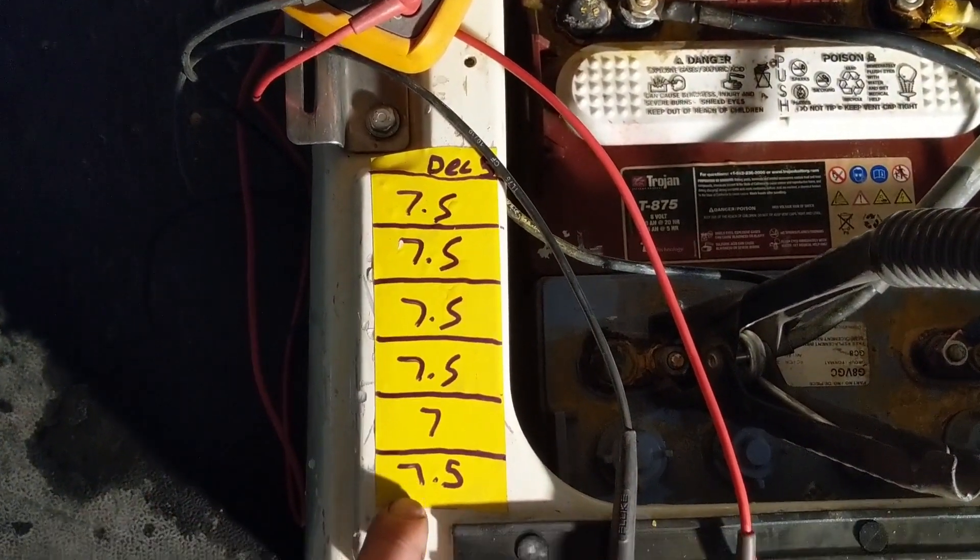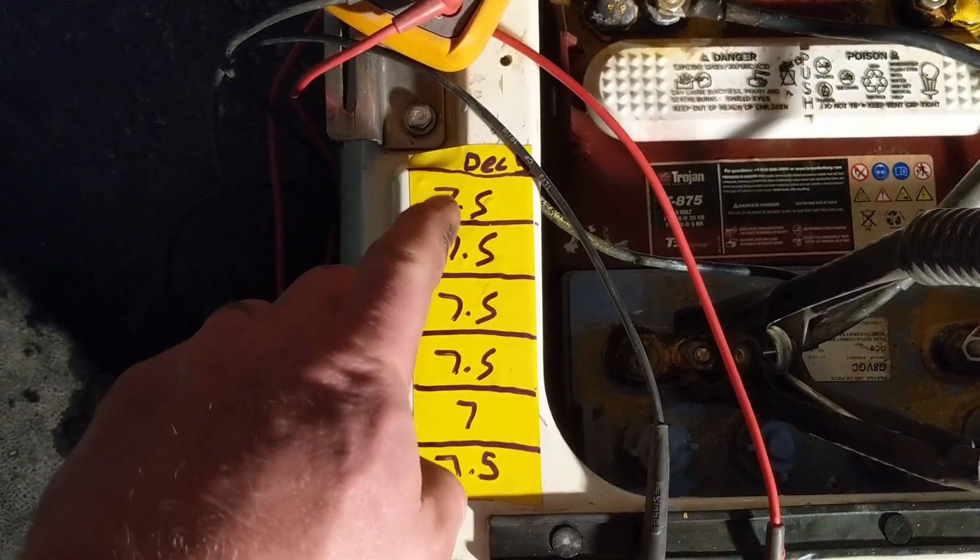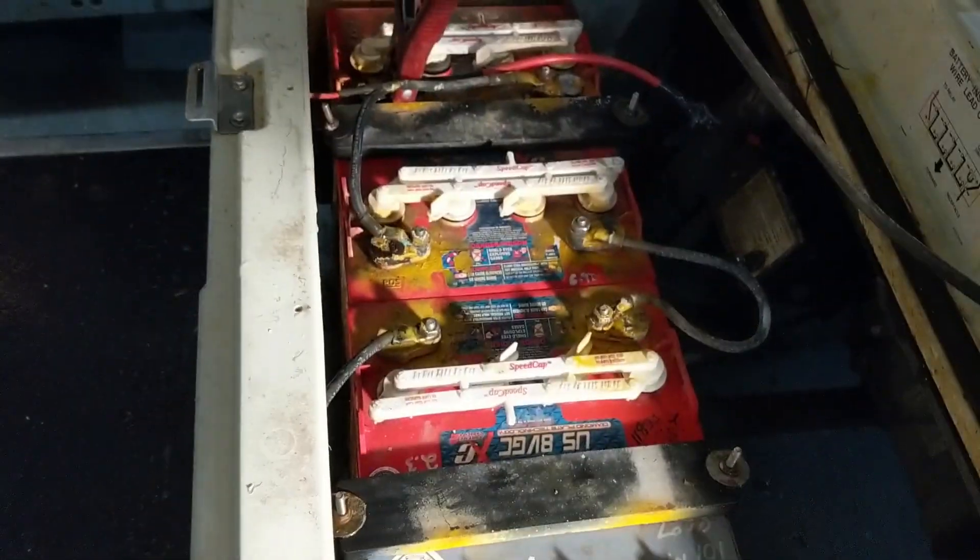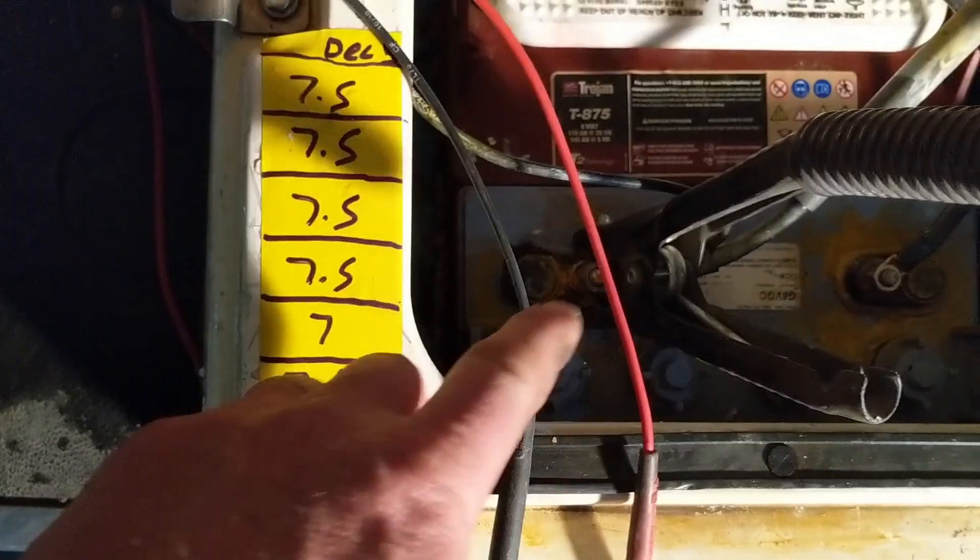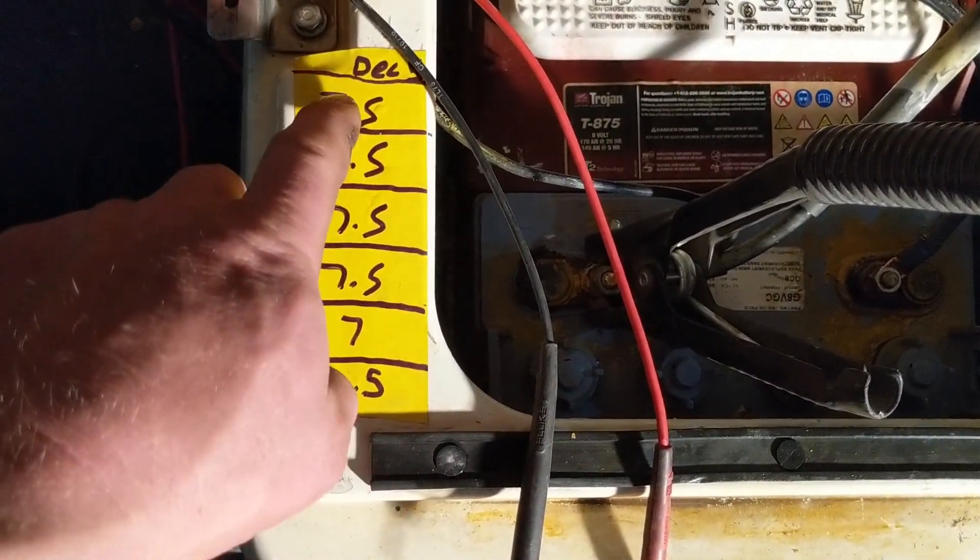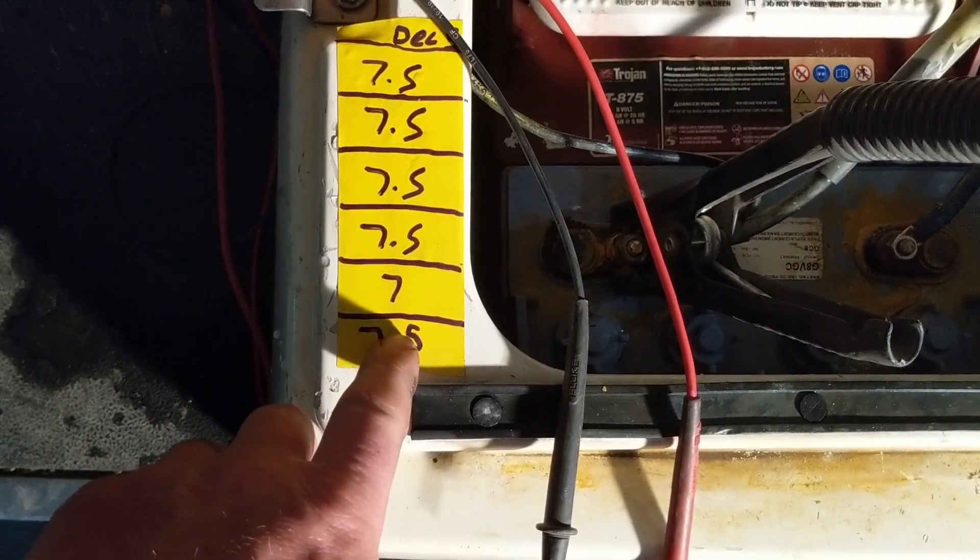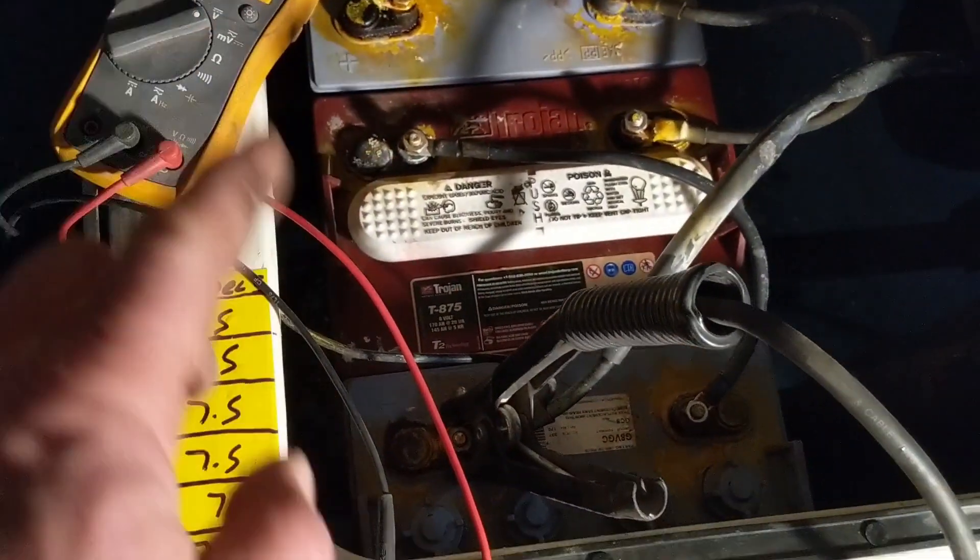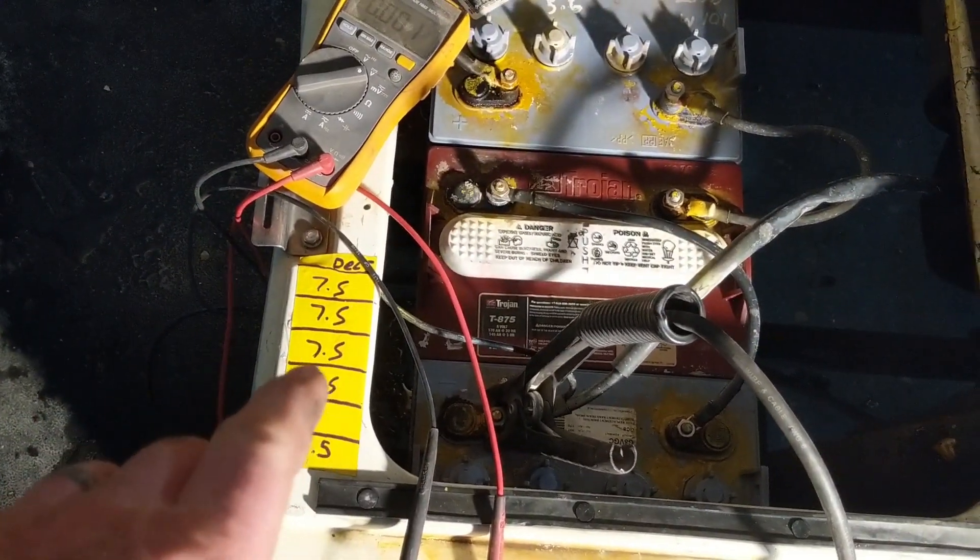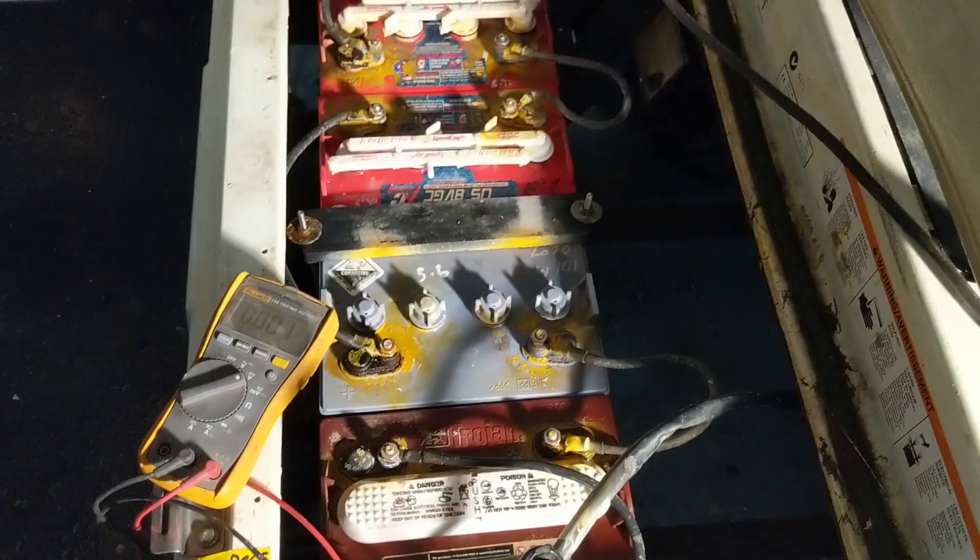The last time I did this for this particular cart was back in December and these were the voltages I picked up across the batteries. So that's that first battery over there and that's the last battery there. They're all pretty close to even. If you add these together and divide them by the time it took to drain them and do some basic math, it'll give you the percentage each battery has of life left in it.